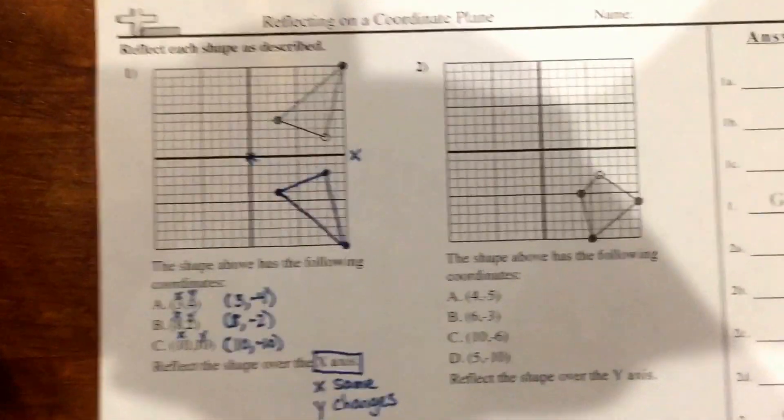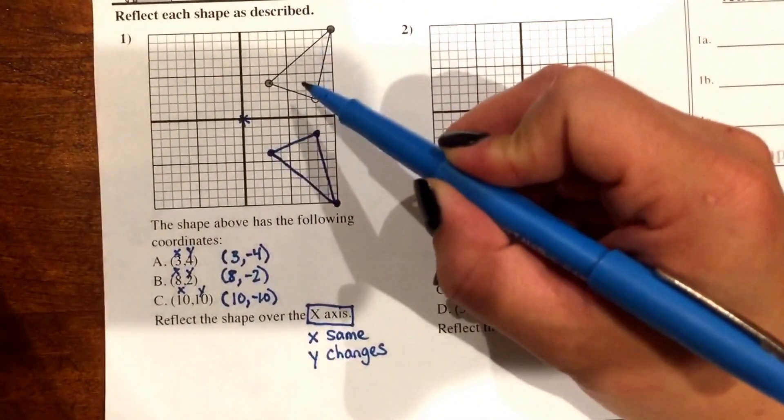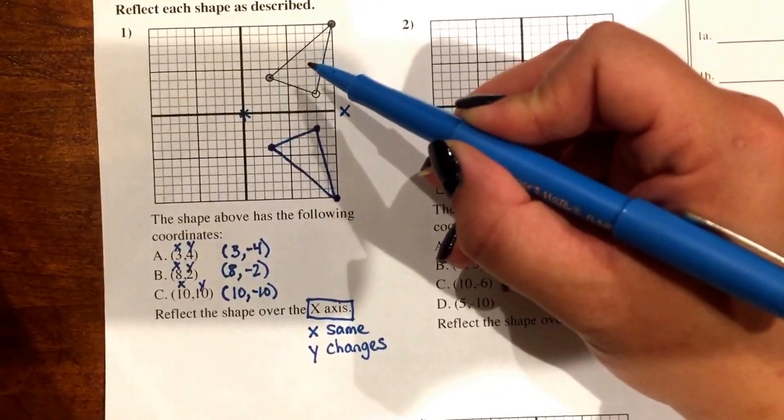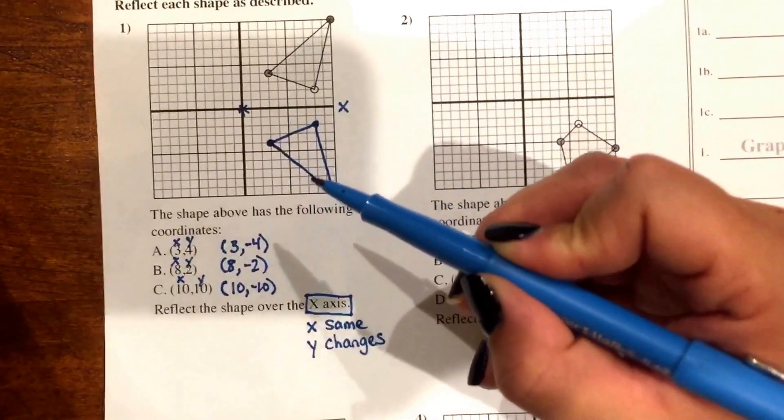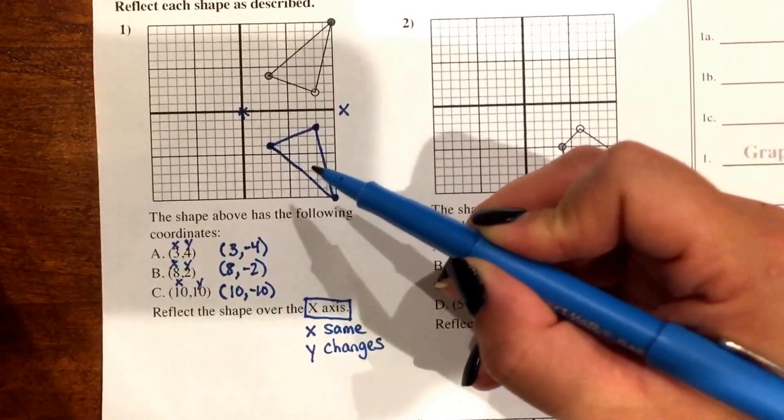So just by looking at the picture, you can tell that this triangle in quadrant 1 looks like it was picked up and flipped upside down over the x-axis into quadrant 4.